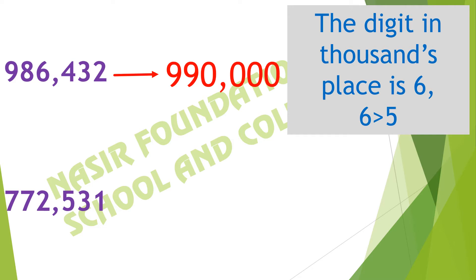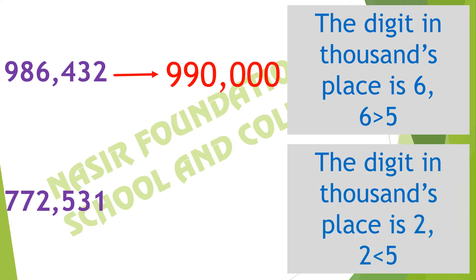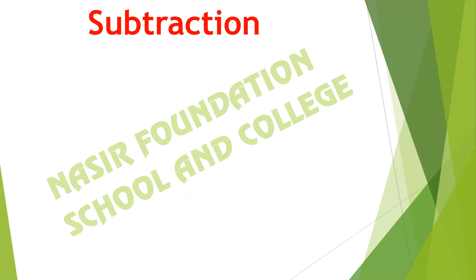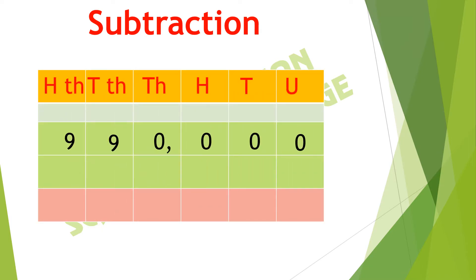Here we have the number 772,531. Its highest value is also 100,000, so we will round it off to the nearest 10,000. The digit in the thousands place is 2, and 2 is less than 5, so the nearest 10,000 is 770,000. Now we will write 990,000 as the minuend and 770,000 as the subtrahend.